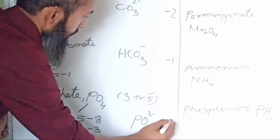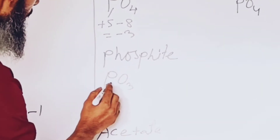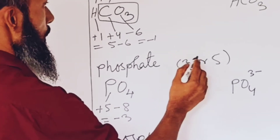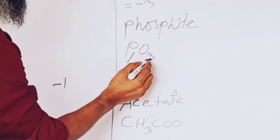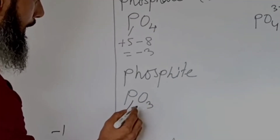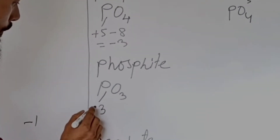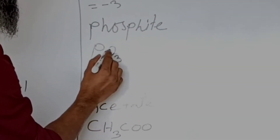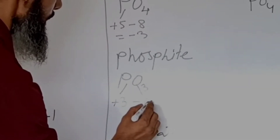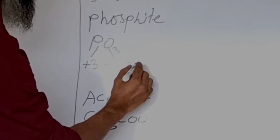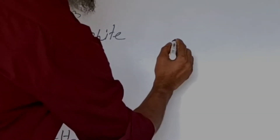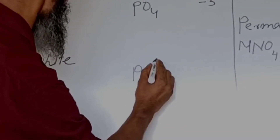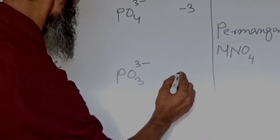Now phosphite — valency of phosphorus here we will take 3 instead of 5, because the number of oxygen atoms is less. Phosphorus is electropositive, oxygen is electronegative with valency 2. Three atoms of oxygen give 2 times 3 equals 6. So plus 3 minus 6 gives valency minus 3. Its symbol is PO3 3-minus.